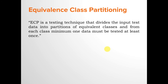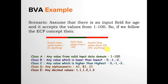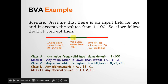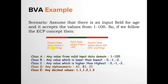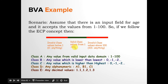For the ECP example, assume there is an input field for age that accepts values from 1 to 100. Following ECP, there will be a valid class from which you can pick any value between 1 and 100. There will also be an invalid class for values lower than the lowest valid value — you can pick 0, minus 1, minus 2, or minus 3. In another invalid class, you keep values higher than the highest valid value.